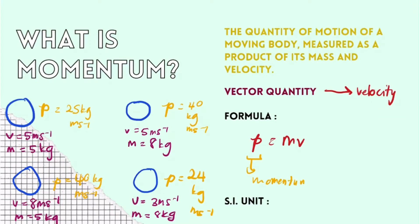Now don't be confused with inertia. Momentum is a quantity that is affected by both the object's mass and velocity. Therefore, if we have two objects — one which has a bigger mass than the other — the object with the bigger mass would still have the biggest momentum. However, if we change the velocity of the smaller object, we would actually get a higher momentum despite having a smaller mass.